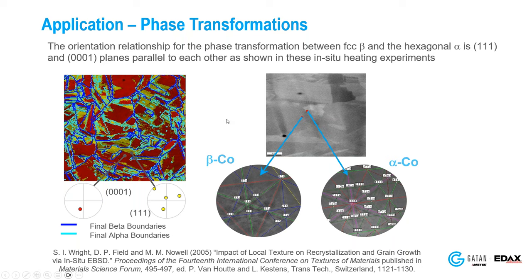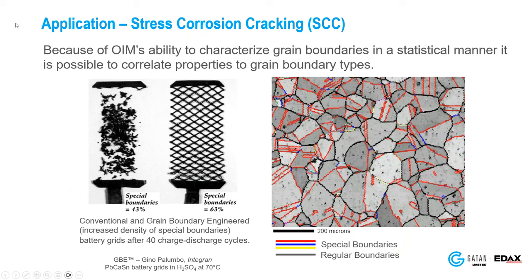Grain boundaries can be important because they can have specific properties or affect the overall bulk properties. This is a great example of a grain boundary engineered material. On the left there are very few special boundaries; on the right there are many. After charging and discharging a battery, the material with lots of special boundaries performs much better. The special boundaries in this case are essentially twins and secondary twins, and you can see there are a lot of twins in this material.